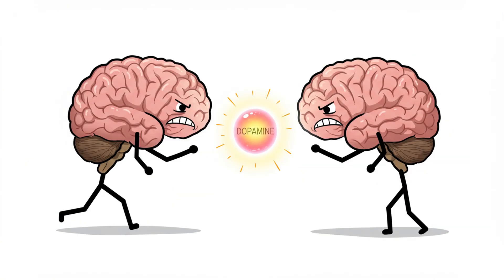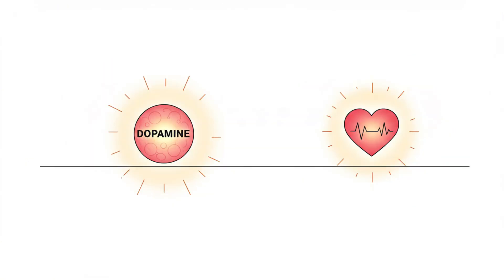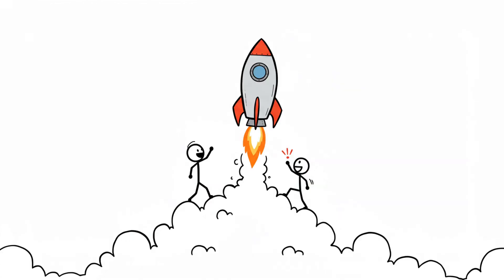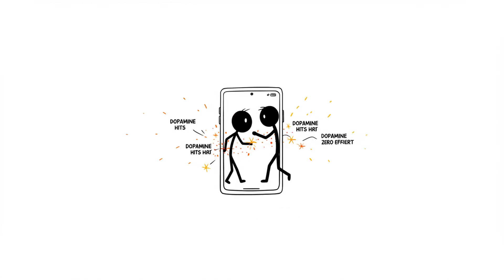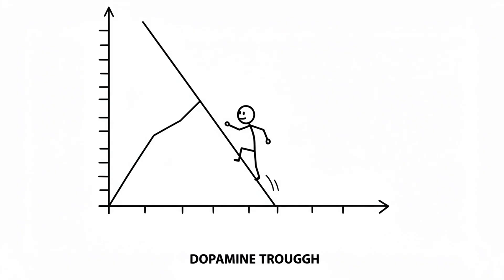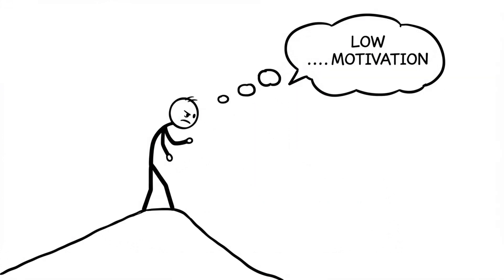Here's where dopamine comes in. Dopamine is often called the pleasure chemical, but that's not the full story. It's actually a motivation chemical. It spikes when you anticipate a reward. Scrolling on social media, your brain gets constant dopamine hits for zero effort.